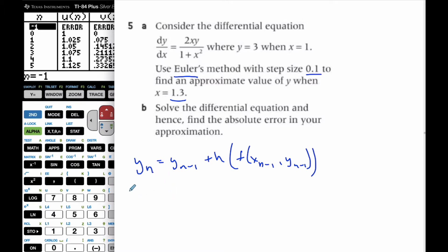And so here, y sub n is y_(n-1), h is my step which is 0.1, times the derivative, which is 2x_(n-1) times y_(n-1) over 1 plus x sub n minus 1 squared.